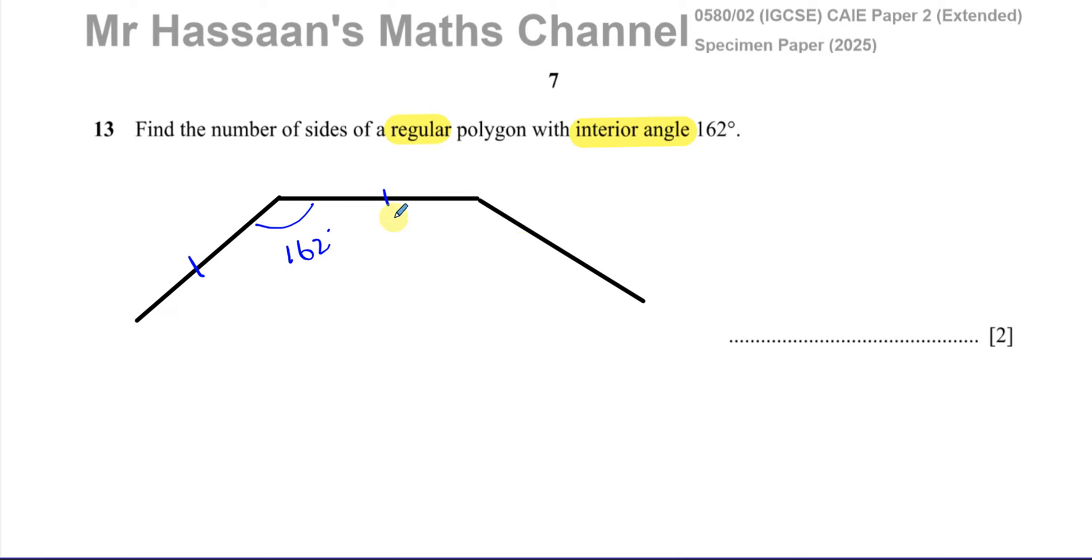All the sides of the polygon will be equal in length. Therefore, all the angles will also be equal in size. Now, if I consider the angle here, which is the exterior angle, that's what's going to help me here.